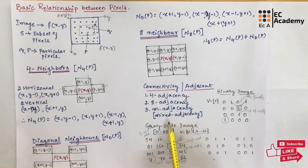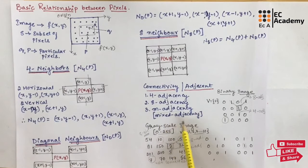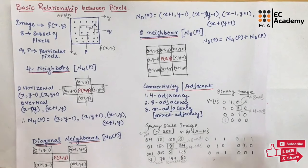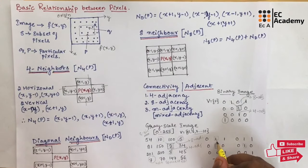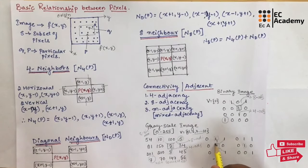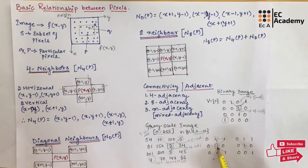Next is M adjacency, also known as mixed adjacency, which is a modification of 8 adjacency. It is introduced to eliminate the ambiguity that often arises when 8 adjacency is used. For example, in a binary image, we can have connectivity between two pixels in diagonal form and between two other pixels in a straight path. For another pixel, connectivity could go diagonally or via a straight-line path to an intermediate pixel. This creates ambiguity about whether the connection is along a straight line or in diagonal form.